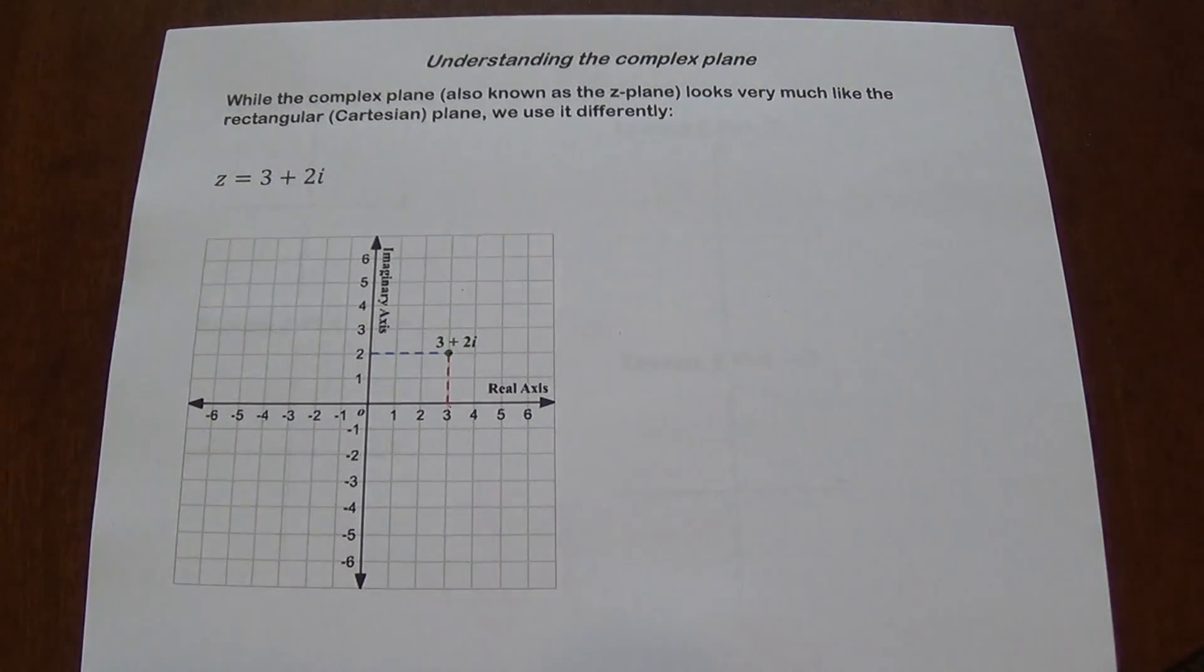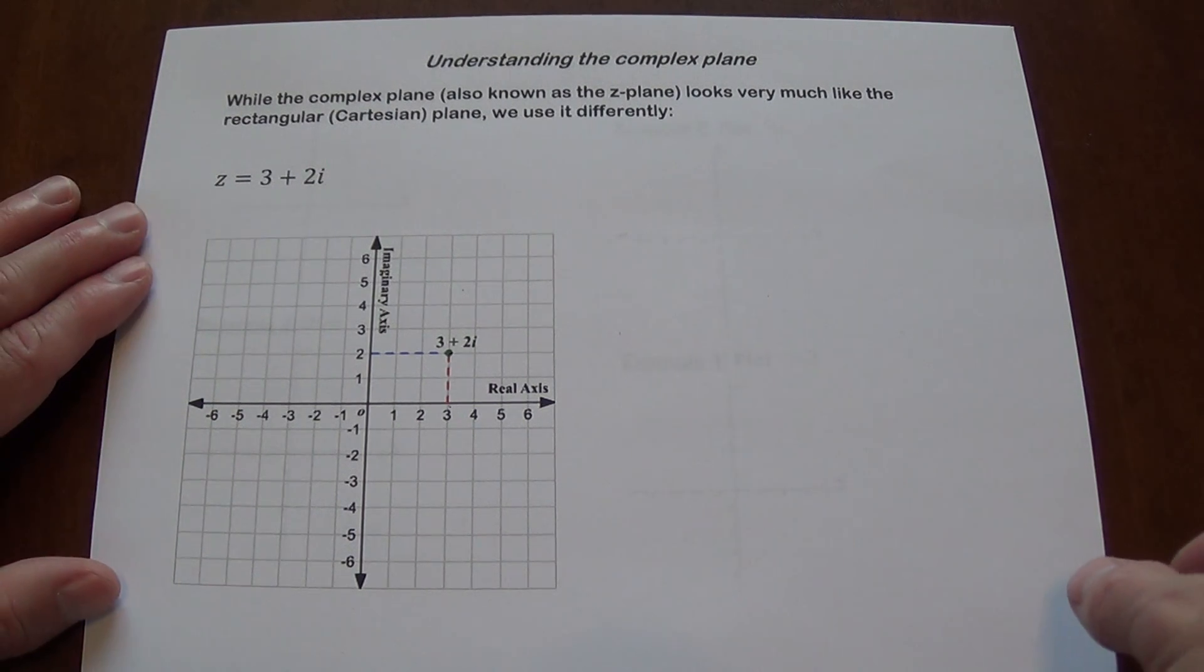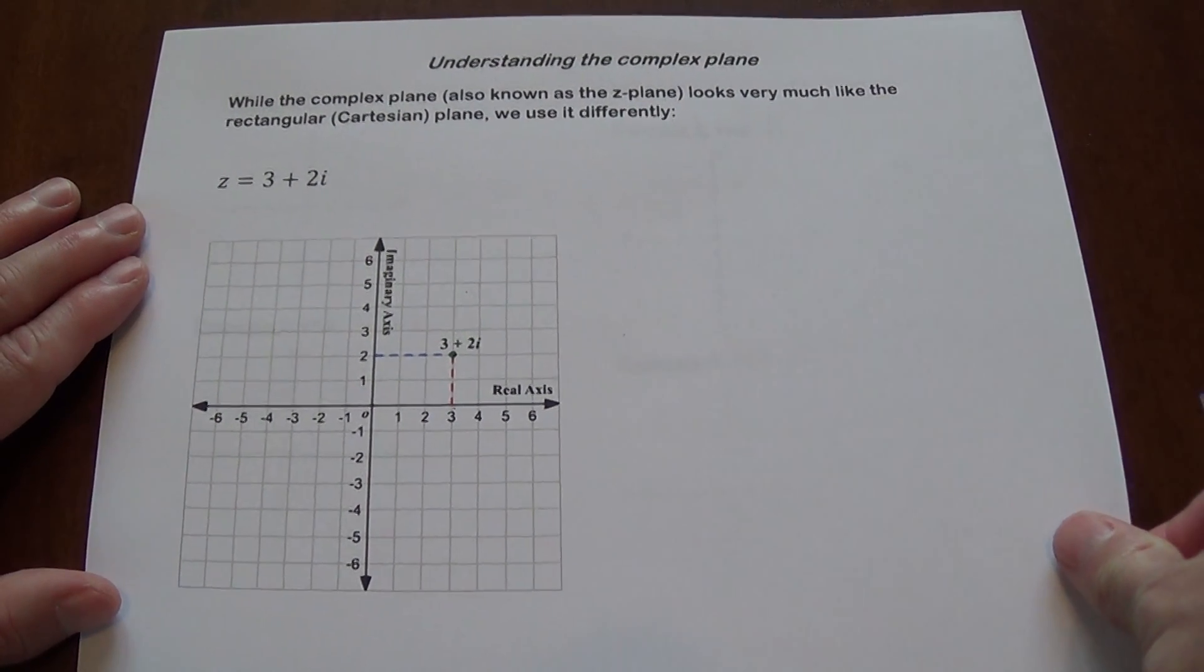Again, this is not a point with coordinates 3, 2, because the complex plane is not the same as a regular rectangular plane. Let's plot some more points.